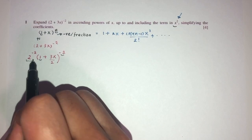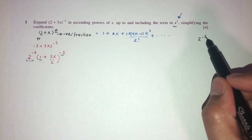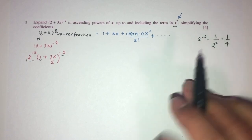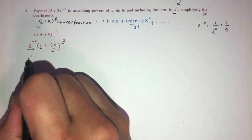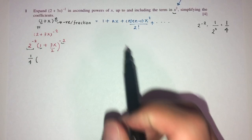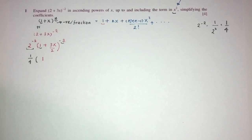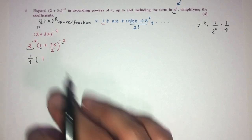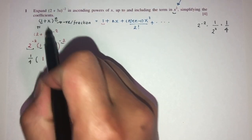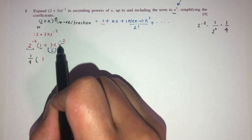By the laws of indices we need to know we can bring 2^(−2) down as 1/4. So let me write this down: 1/4, and the rest I will expand. This is 1 again — we are doing this by comparison, plugging values into the formula. So this is my 1, this is my new x, and my n will be −2.